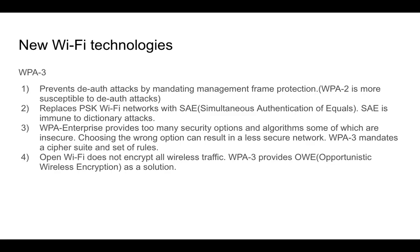A second benefit of WPA3 is its use of SAE — Simultaneous Authentication of Equals — which provides immunity to dictionary attacks, both passive and active. WPA2 enterprise also has the problem of too many security options and algorithms, some of which are inherently insecure — choosing the wrong option makes your network less secure. With WPA3, mandatory cipher suites and rules are set, giving you fewer options and less chance of misconfiguration. Finally, WPA3 provides Opportunistic Wireless Encryption (OWE), allowing even open Wi-Fi to encrypt all wireless traffic instead of leaving it unencrypted.